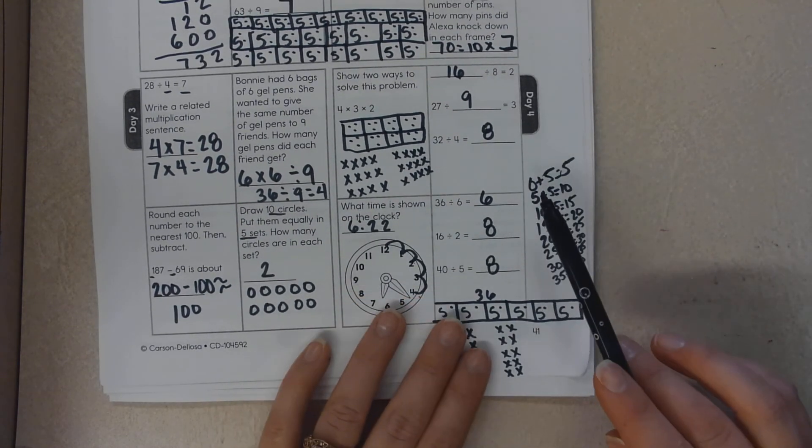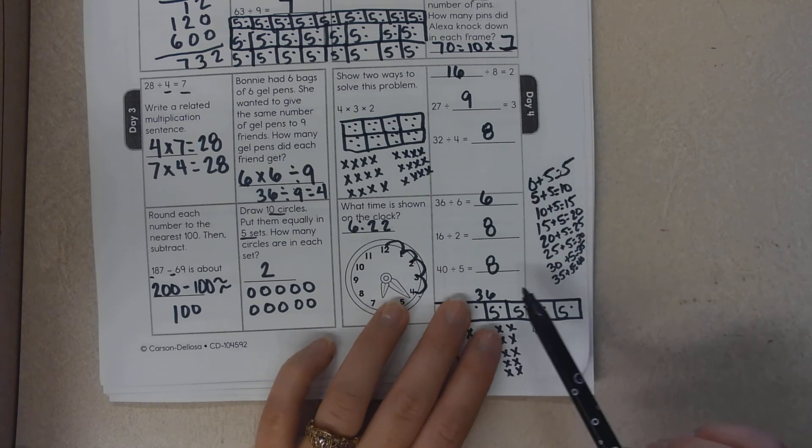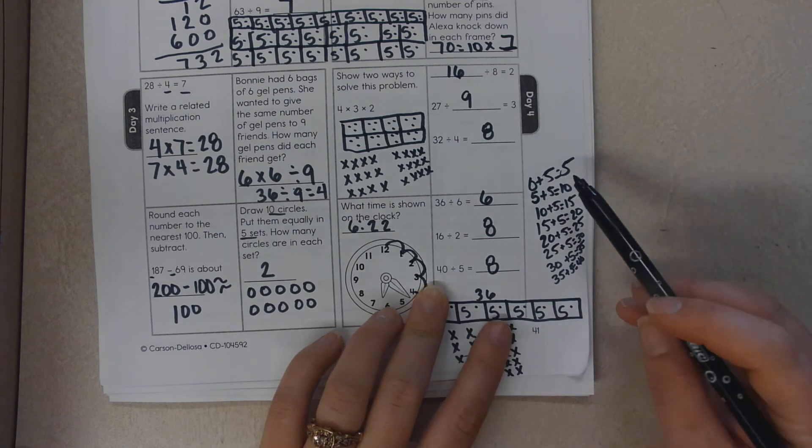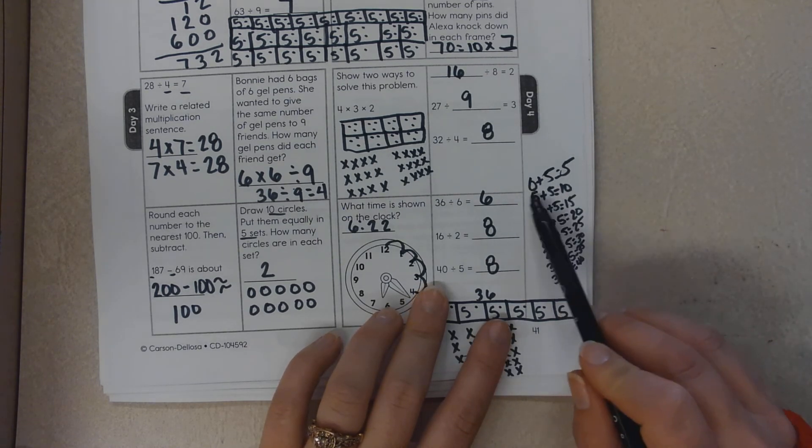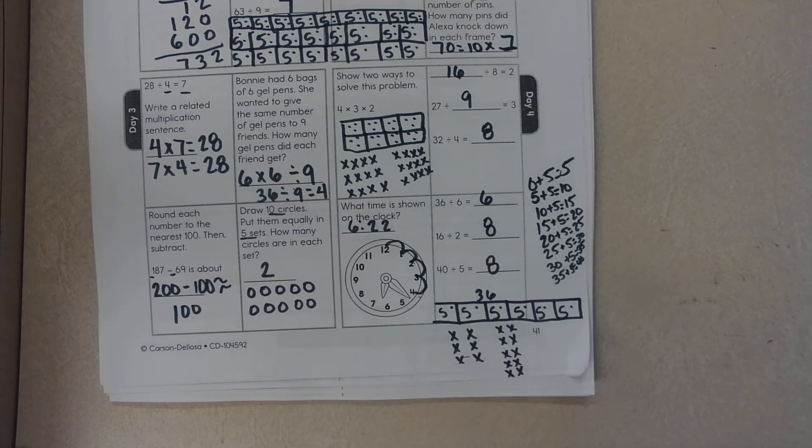The last one I wanted to show you was called repeated addition. So you start at zero and you repeatedly add till you get to 40 or the product. So I added eight times. And that concludes today's lesson.